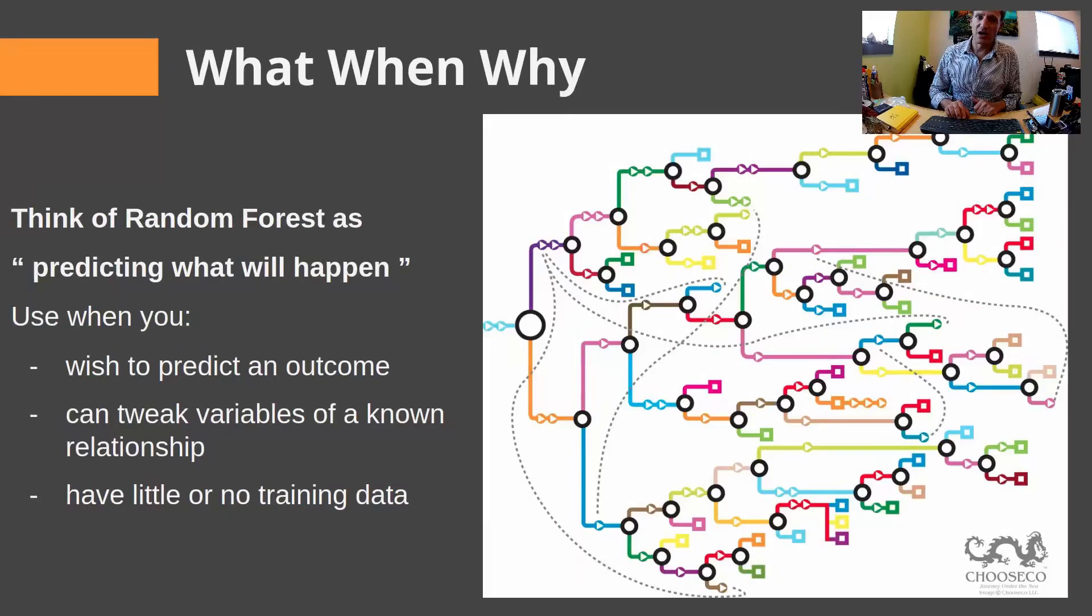So, the what, when, why. Think of random forest as great for predictions. So, use it when you want to predict an outcome. When, in your data model, you know that certain variables are fixed. When I turn on a tap, water comes out. What happens if I turn on that tap only part way? Or, what happens if I break the pipe and then turn on the water? So, you can tweak certain variables of a known relationship and predict the outcome. And, it also works very well when you have little or no training data.